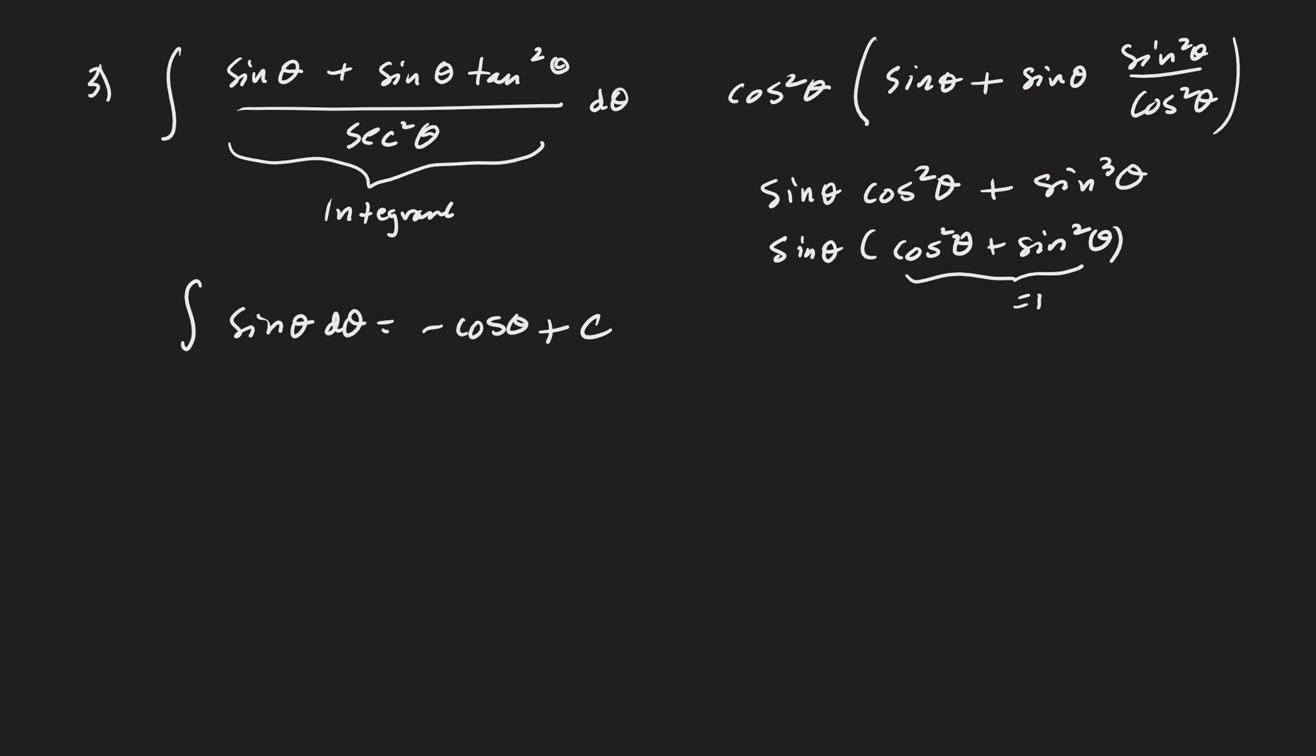This is really just something called the net rate of change theorem, or the net change theorem. And the idea here is that given a function f of x, f prime of x represents what? The rate of change of f, right? So, for example, if f of x was volume, then f prime of x would be the change in the volume. If f of x was population, f prime of x represents how the population is evolving in time or changing in time. And so f prime of x is the rate of change.